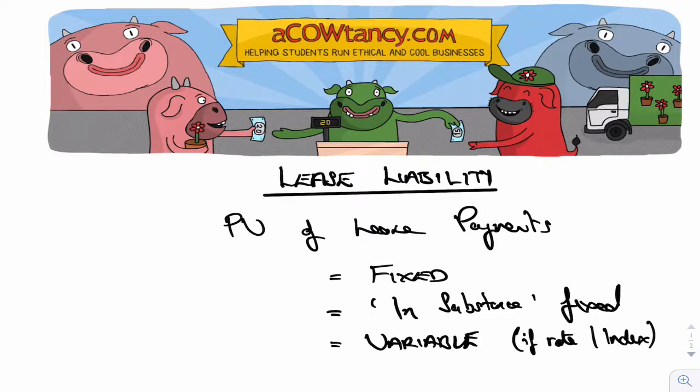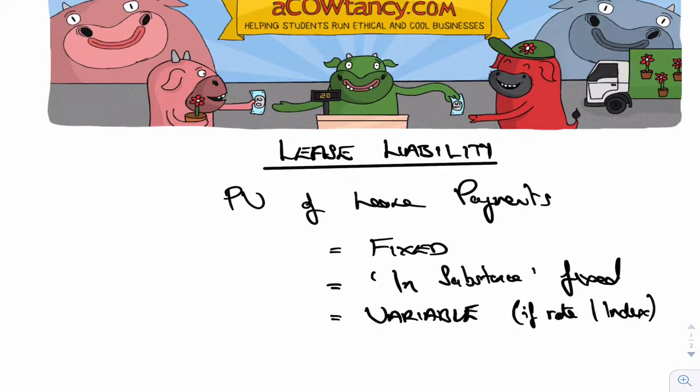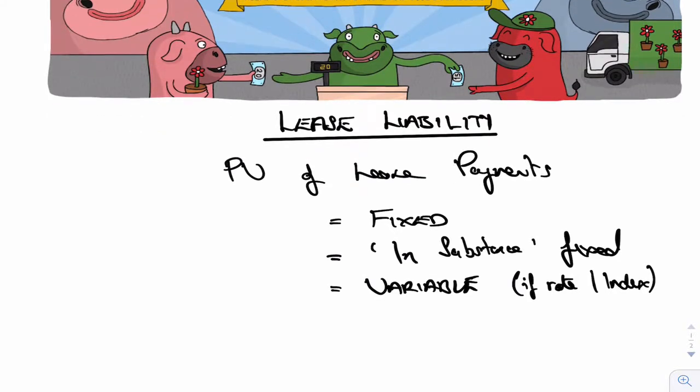The variable payments - but only those variable ones based upon a rate or an index go into the lease liability. Such as the CPI (consumer price index), inflation, LIBOR, interest rates, market rates, or market rentals. If it's based on those, then you include it.